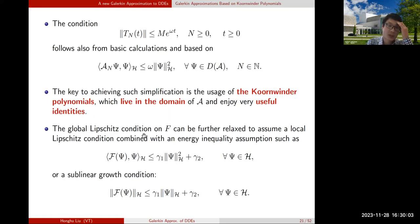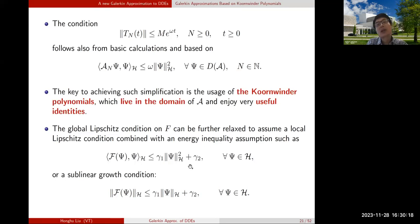The global Lipschitz condition on F is quite restrictive. We also have relaxed forms: if F is locally Lipschitz and additionally satisfies an energy inequality of a certain form, we can still apply the results to get convergence. Also, if the energy inequality is replaced by a sublinear growth condition, we can also get a convergence result.